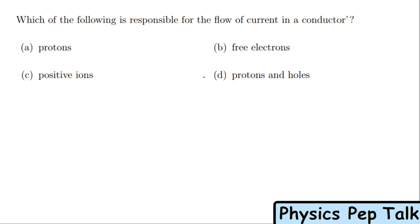Option D is the right answer for this question. Next problem: Which of the following is responsible for the flow of current in a conductor? In semiconductors, we consider positive and negative charges, electrons or holes as charge carriers. But in conductors, only free electrons are the charge carriers. So option B is the right answer.